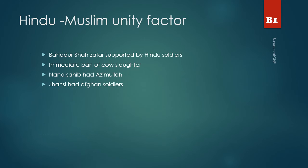There are many questions asked about the Hindu-Muslim unity factor during the revolt of 1857. For example, Bahadur Shah Zafar was a Muslim ruler but was supported by Hindu soldiers, and there was an immediate ban on cow slaughter in all of Delhi. Nana Sahib had Azimullah as his aide. Rani Lakshmibai of Jhansi also had Muslim Afghan soldiers in her troops.